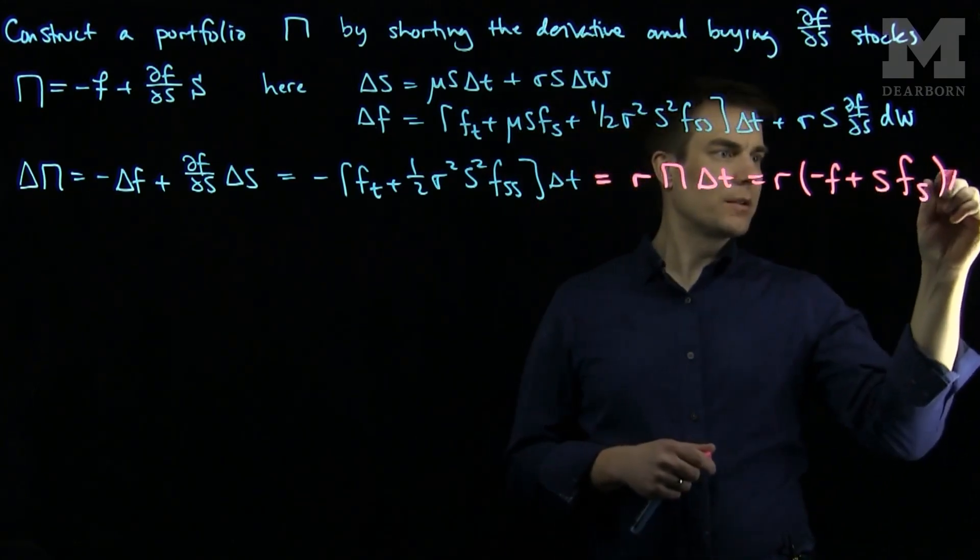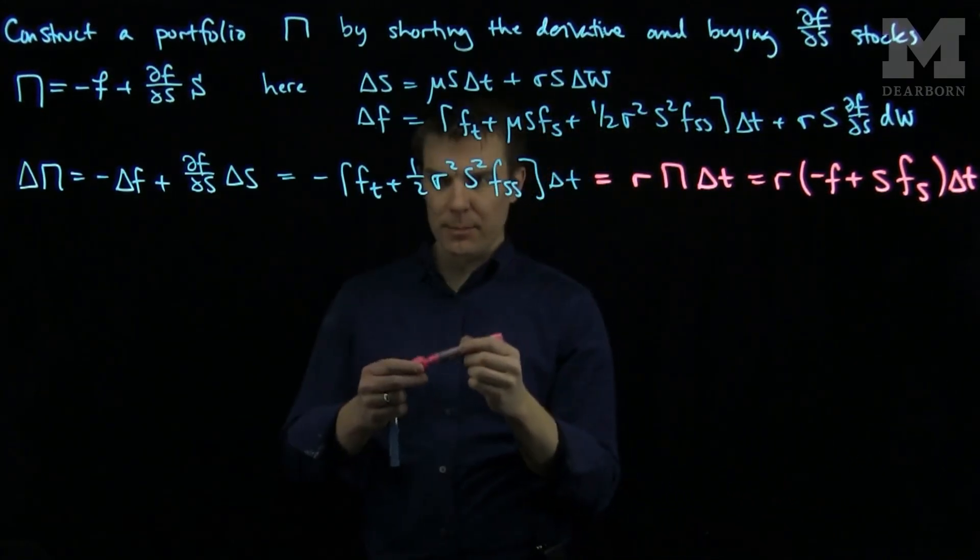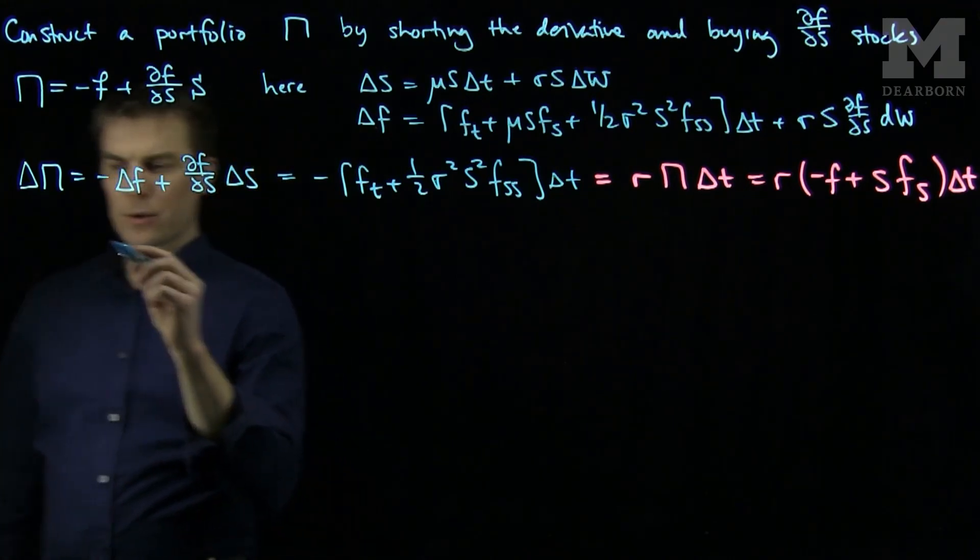Now, times Δt. The Δt is on both sides, the equation will cancel. And we arrive at the Black-Scholes PDE.